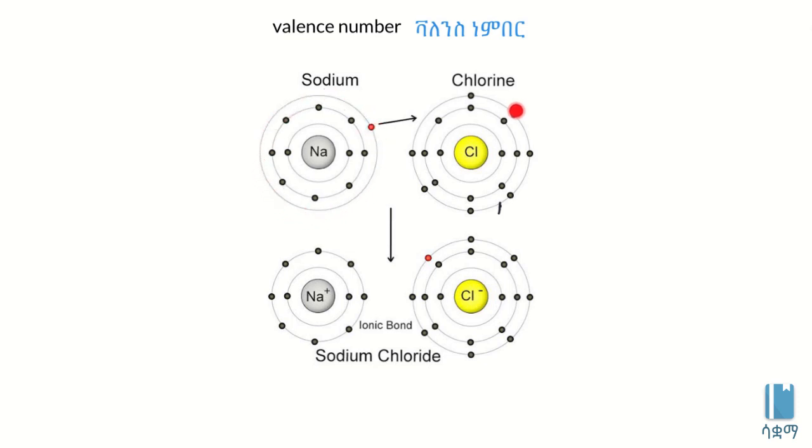Chlorine has seven valence electrons. Let's count: one, two, three, four, five, six, seven electrons in the outermost shell.